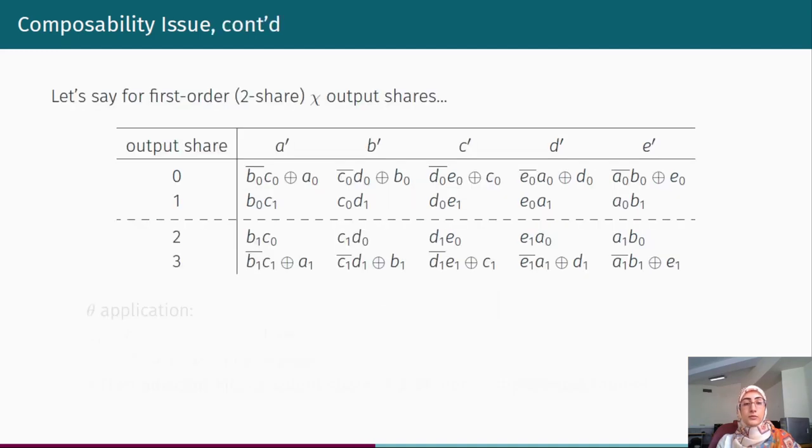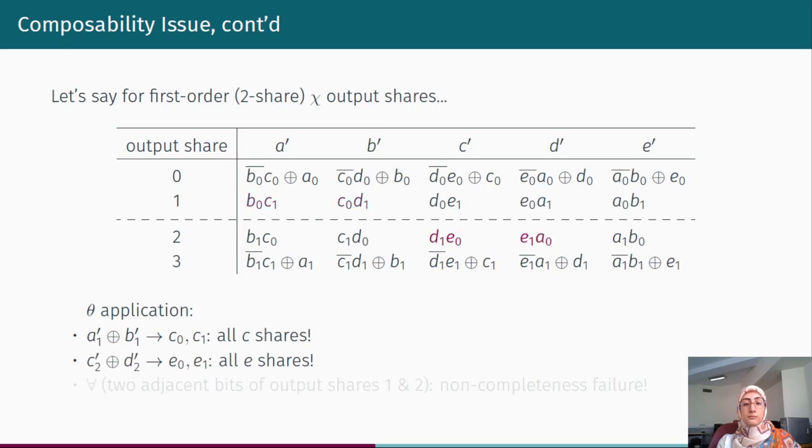Let's check what happens for first order implementation, where we have two shared input bits and four shared output bits. The theta is applied to the outputs of Chi function, and if you keep an eye on output share one, for example, we can see that XORing a prime and b prime leads to a leakage on all shares of C input bits. The same leakage exists when we explore the second, the third shares of c prime and d prime. And speaking more generally, XORing every two adjacent bits of output shares one and two results in a dangerous non-completeness failure.